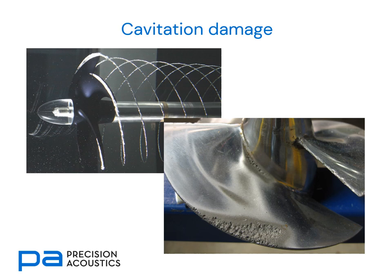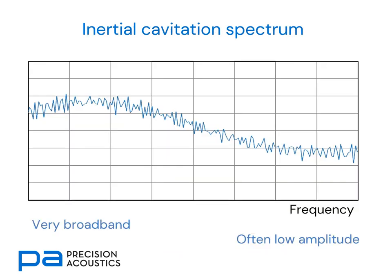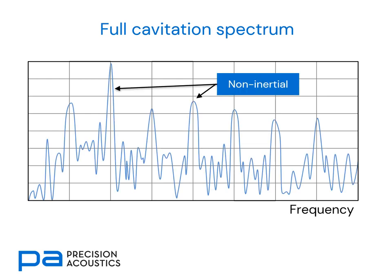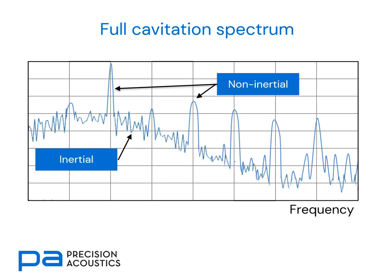Cavitation damage is therefore really destructive. Let's look at the cavitation spectra that we might see from a collapsing bubble. As the bubble collapses, we can end up with a very broadband signature, but often the spectral amplitude is quite low. These are quite small acoustic signals spread over a broad frequency range. At higher pressure levels, we will have inertial cavitation, but we may also have non-inertial cavitation occurring as well. So for a full cavitation spectrum, we may see the spectral peaks which are the non-inertial signatures, and then a change in the overall baseline resulting from the collapsing bubbles.